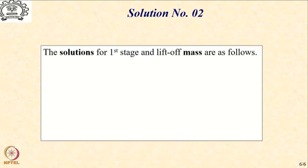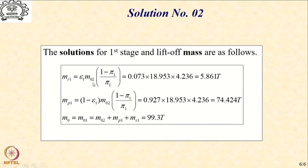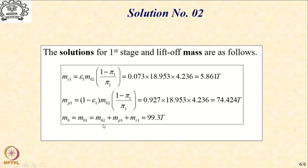We repeat the same process for the first stage. We assume M02 to be the payload for the first stage. Based on that, the structural mass of the first stage is 5.861 tons and the propellant mass of the first stage is 74.424 tons. The starting mass of the first stage — which is also the total liftoff mass — is the sum of the propellant mass, structural mass, and its payload, which is M02. Summing all these gives a total liftoff mass of 99.3 tons.